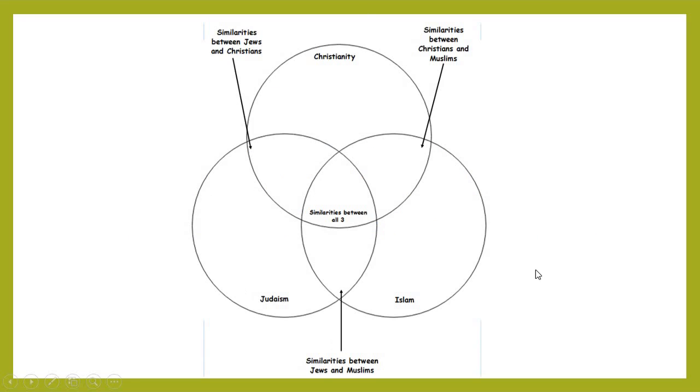So, to help you visualise what I'm trying to explain, here is a circle for each of the three religions that you researched: Christianity, Judaism, and Islam.